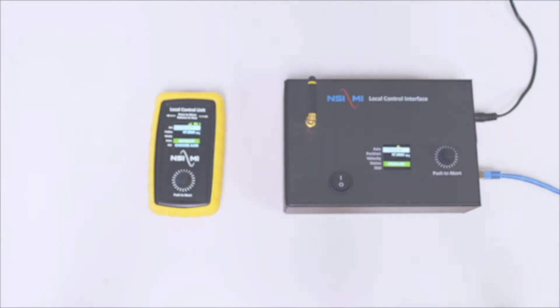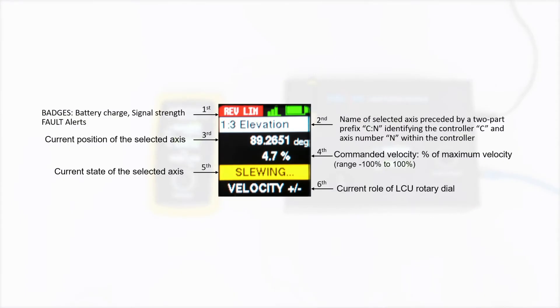The first line displays the fault alerts. In case of a wireless LCU, the first line also shows the battery status and radio strength indicators. The second line shows the name of the selected access.